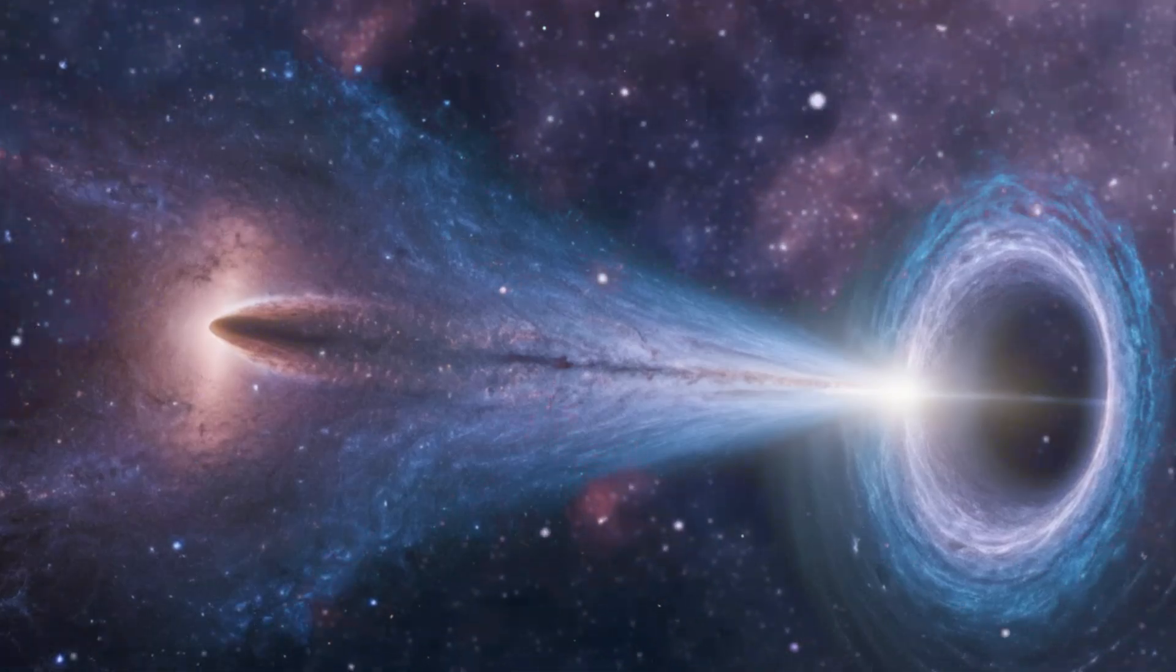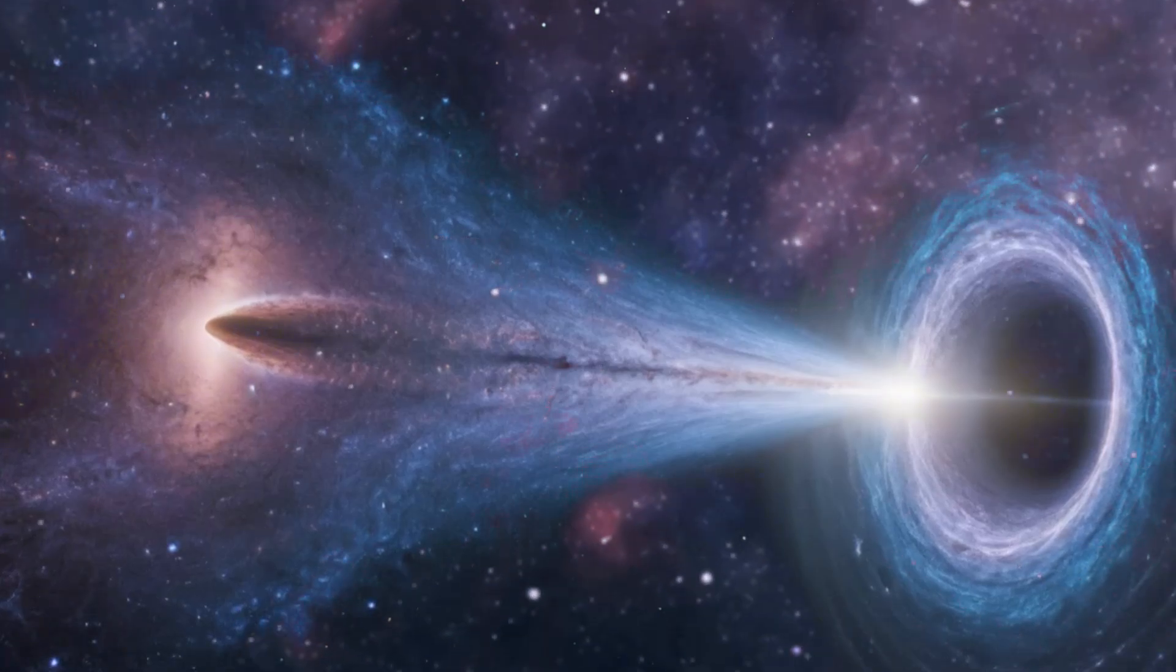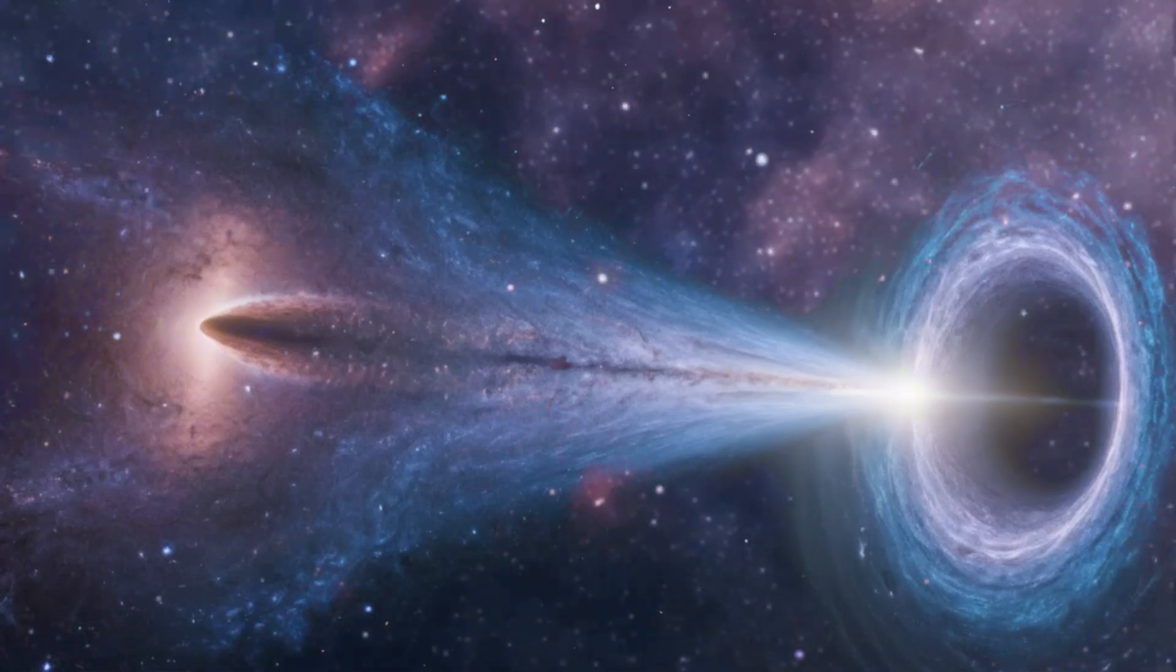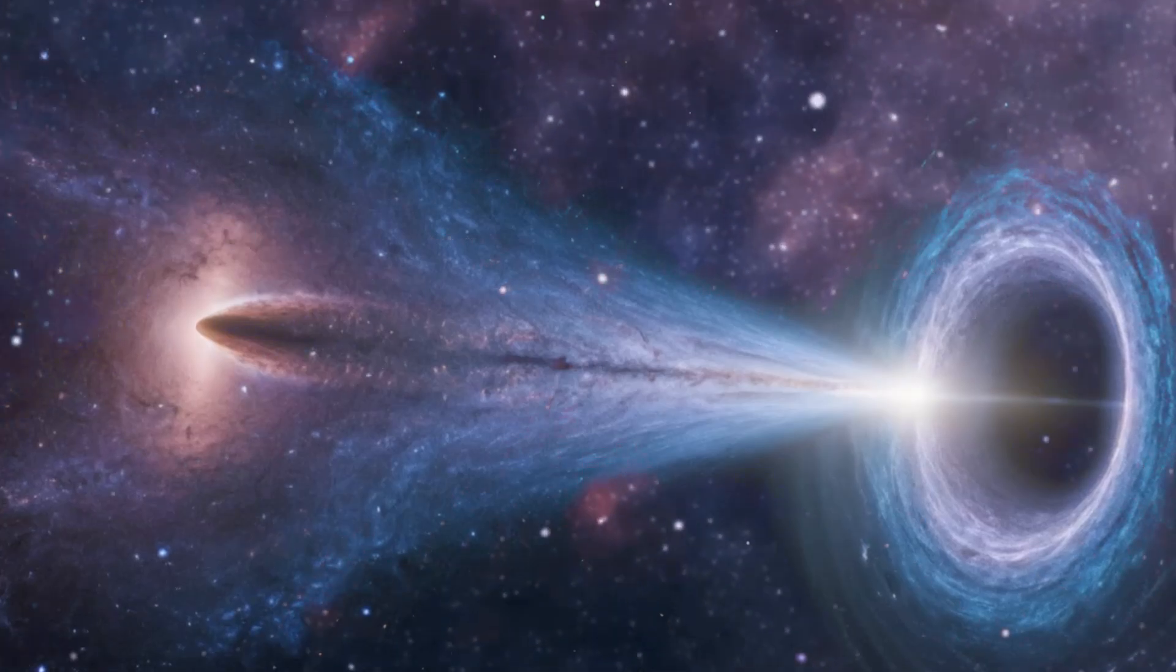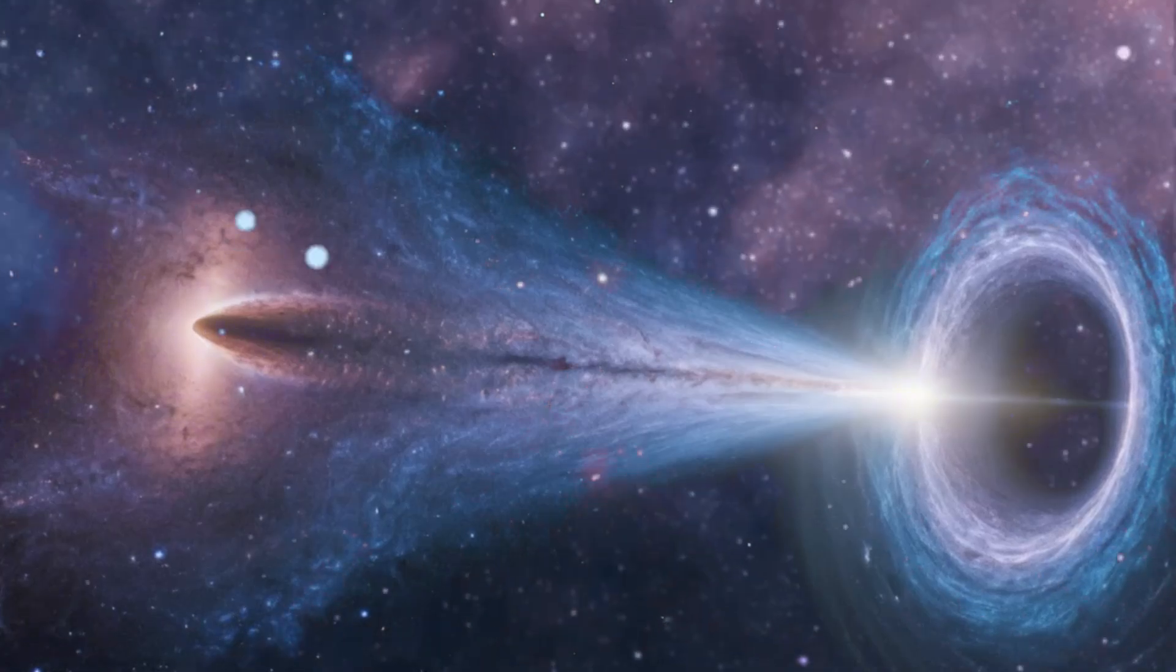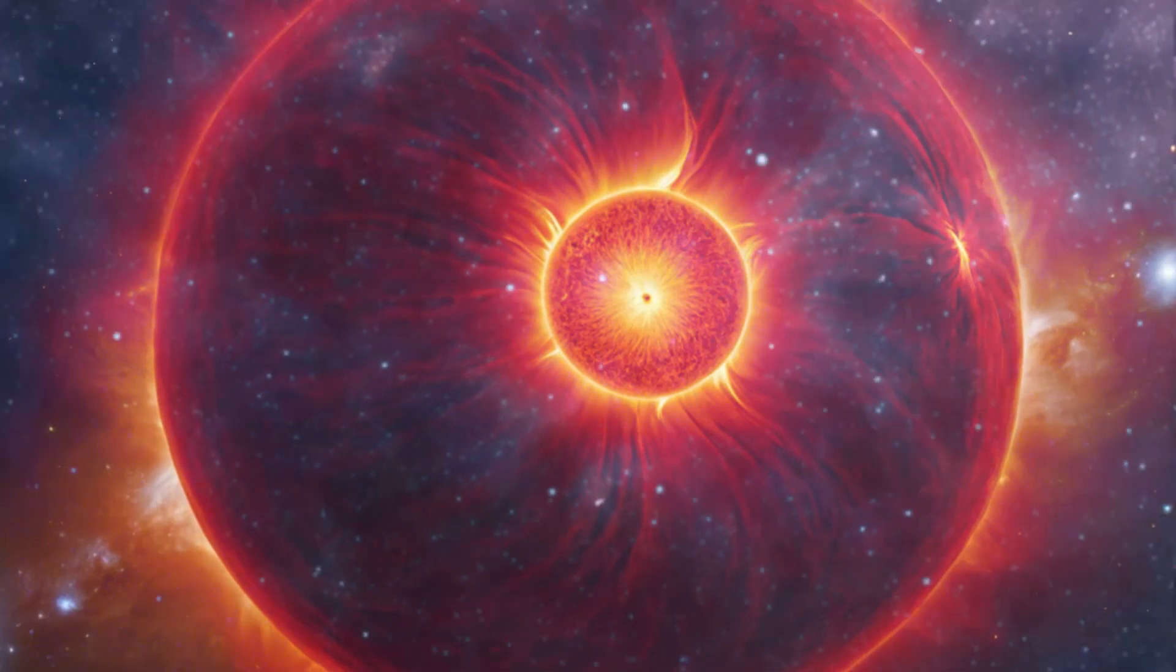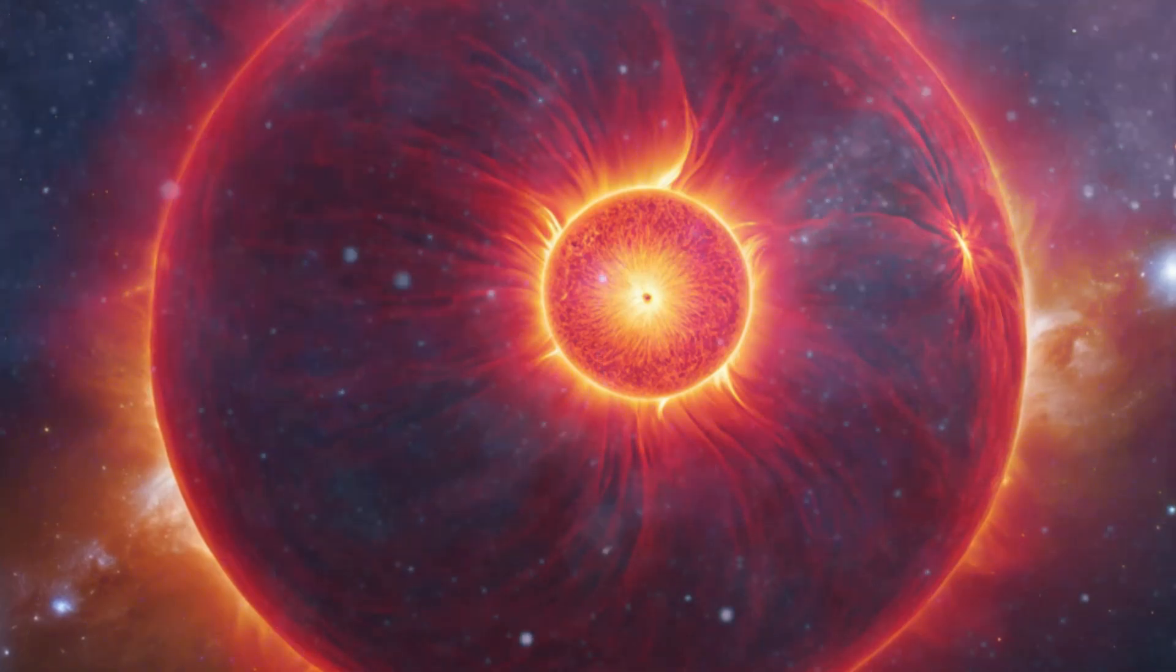As we gaze upon Betelgeuse, whether through a telescope or simply with our eyes, we are reminded of our own fleeting moments in the grand scheme of the cosmos. The light we see from Betelgeuse today is from the past, 650 years ago to be exact. When the light from Betelgeuse first began its journey toward Earth, it was the dawn of the Renaissance, and explorers like Marco Polo were making their mark on history. Each glimpse of Betelgeuse is like looking through an ancient time capsule, offering us a view into the star's distant past. If Betelgeuse has already gone supernova, we wouldn't know about it for another 650 years. Our observations of Betelgeuse may already be seeing the aftermath of an event that occurred long ago, and we're simply waiting for the cosmic light show to arrive here on Earth.